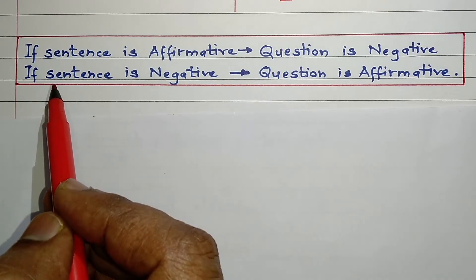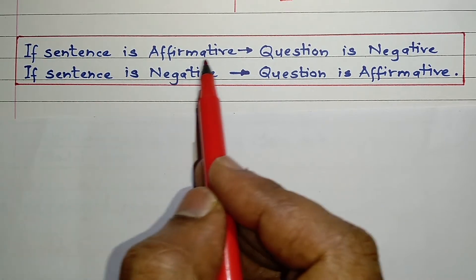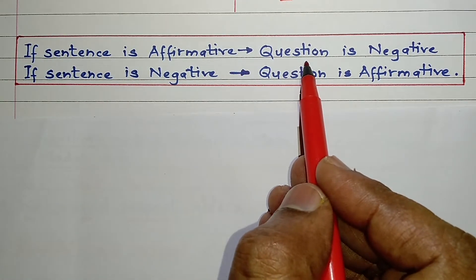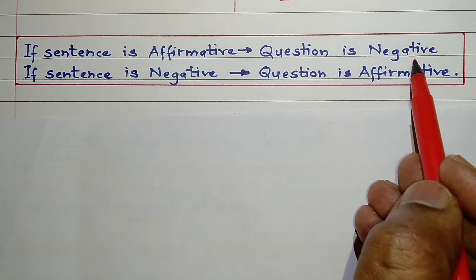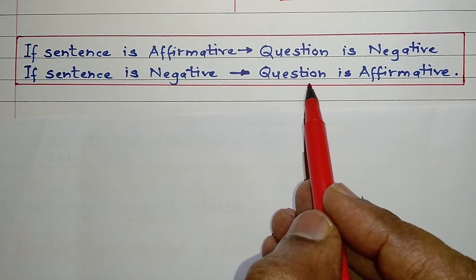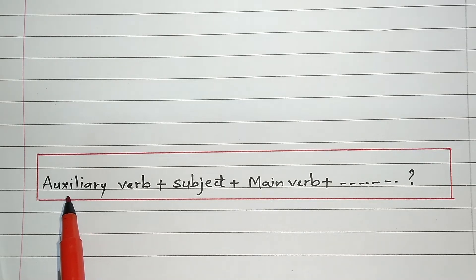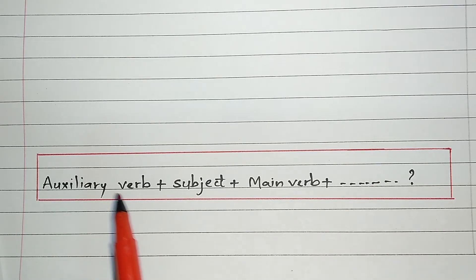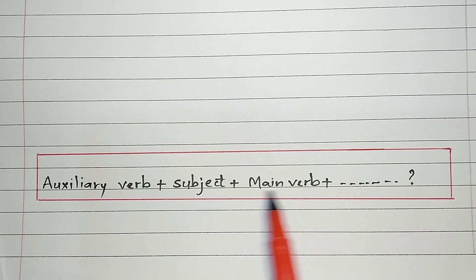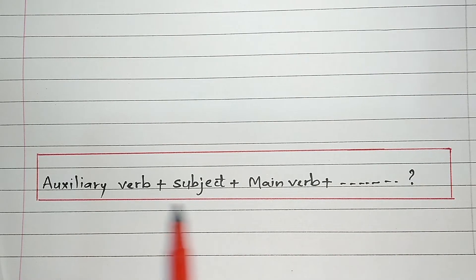But friends, let's not forget the most basic rule. If the sentence is affirmative, then the interrogative sentence or the question that we form is negative. And if the sentence is negative, then the interrogative sentence or the question that we form is affirmative. The second most important thing is the format of our interrogative sentence. The format is: auxiliary verb, followed by the subject, followed by the main verb, then the remaining part of the sentence, and the question mark at the end.